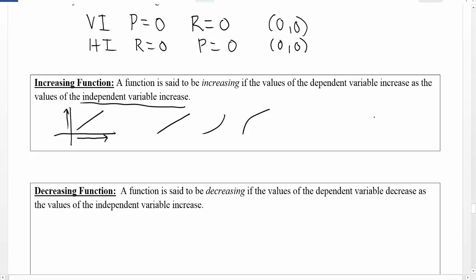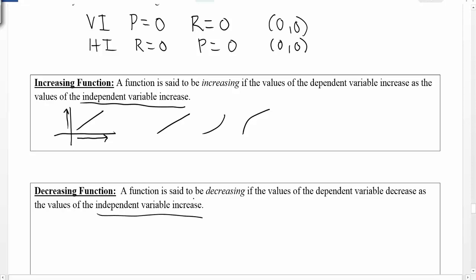Similarly, a function is said to be decreasing if the values of the dependent variable decrease as the values of the independent variable increase. What we're always doing when evaluating what's happening is determining what's happening as the x values increase. So for all tests — whether on a table, a function, or a picture — we ask what happens as x goes from left to right. If the y values go up, we're increasing; if they go down, we're decreasing.